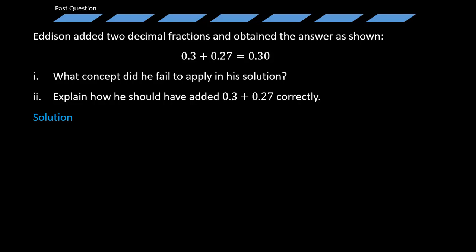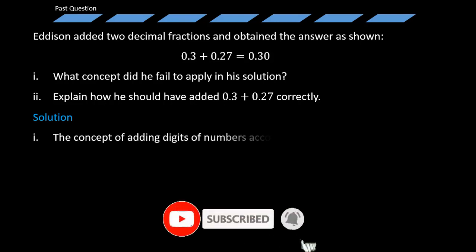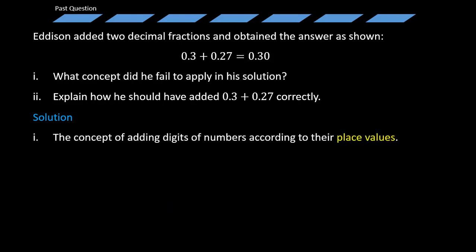Now if you look at Edison's solution, there is something wrong with it. Can you take some time to actually identify what is wrong with his solution? Now, if you look carefully, Edison failed to apply the concept of adding digits of numbers according to their place values.